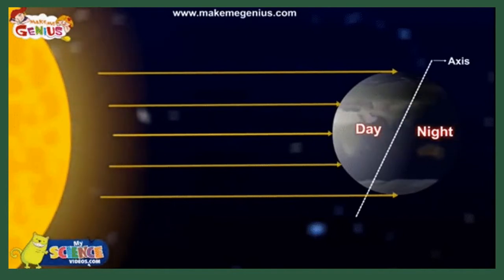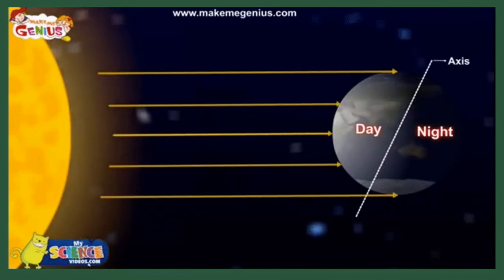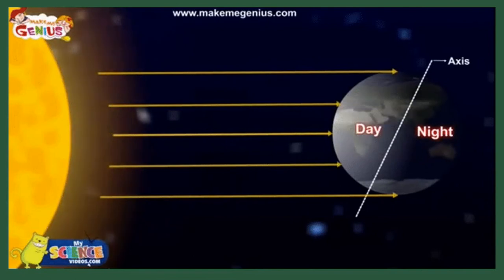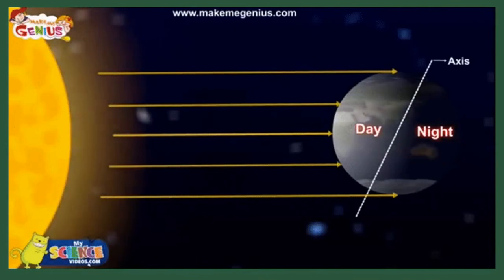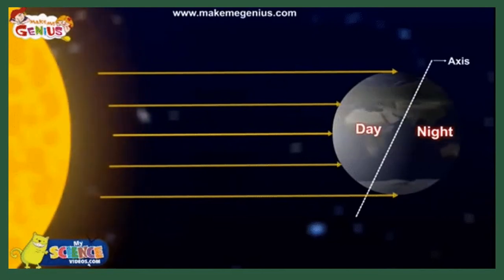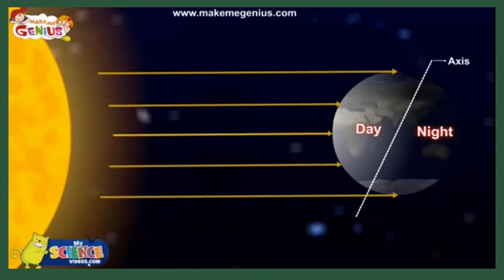And as the Earth rotates during 24 hours, the side of Earth that had night now faces the sun and gets light from the sun, so it gets day now and the other side experiences night. As you can see on the screen, the side of Earth which is in front of the sun gets light — there is day. Whereas the other side which does not get light from the sun has night. Due to the rotation of the Earth, the side which has night now faces the sun and gets day. This rotation continues and we experience day and night.